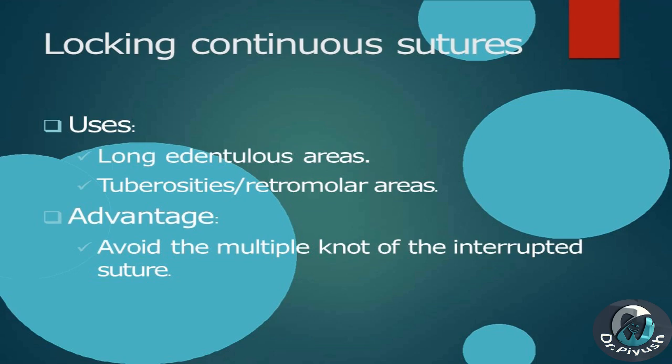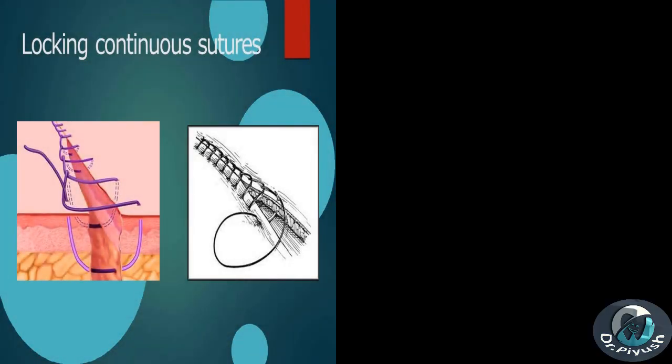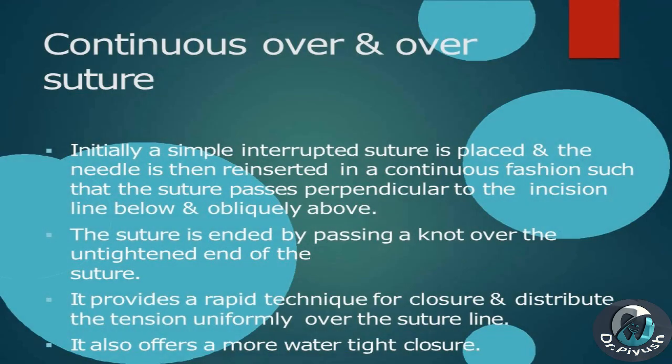Locking continuous suture technique: first, a single interrupted suture is used to make a tie. The needle is next inserted through the underlying surface of the flap, then passed through the remaining loop of the suture and pulled tightly, thus locking it. This procedure is continued until the final suture is tied off at the terminal end.